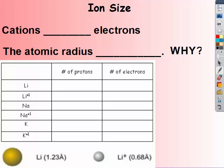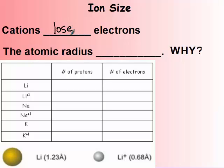Ion size. Cations lose electrons. Therefore the atomic radius decreases. To figure out why, we need to figure out our protons and electrons for these atoms and ions.